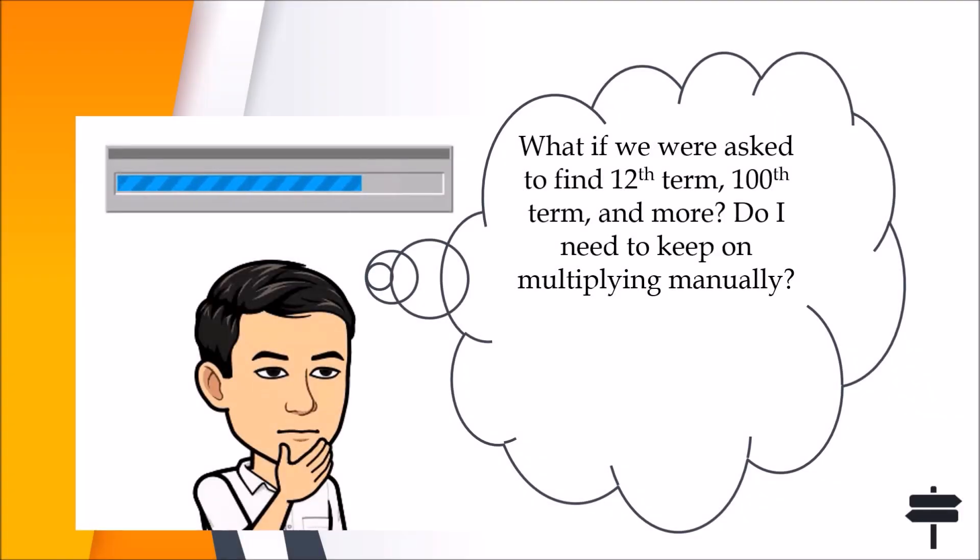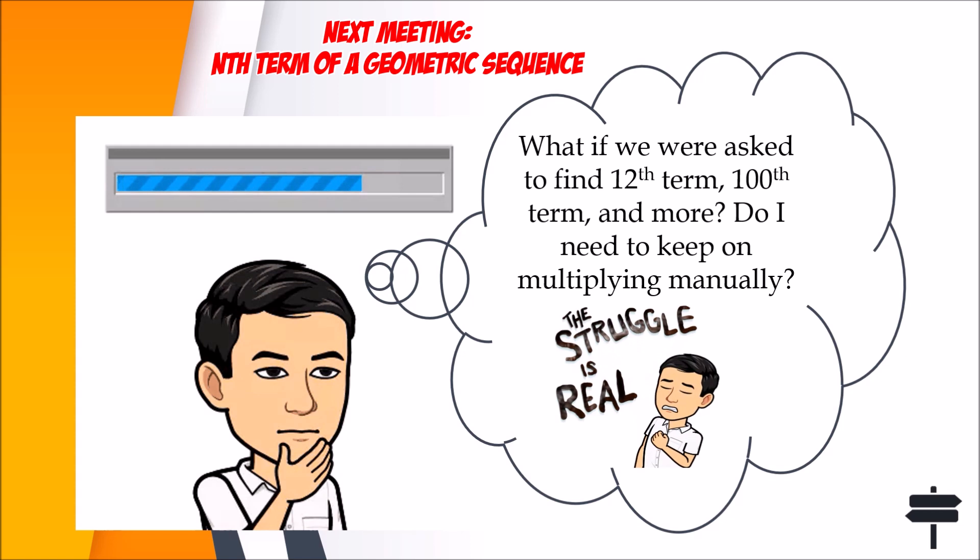What if we were asked to find the 12th term, the 100th term, and more? Do we need to keep on multiplying manually? Or continuously multiplying by the common ratio? I guess the struggle is real. But for you to know, by next meeting, we are going to generate a formula that will ace us to find any term in a geometric sequence.